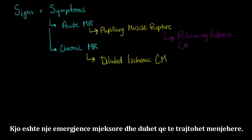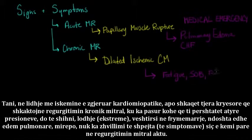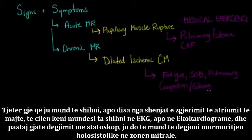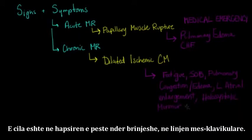For chronic mitral regurgitation — such as dilated ischemic cardiomyopathy or other major causes where there has been time to adjust to these pressures — you'll see things like fatigue, shortness of breath, and maybe some pulmonary congestion or edema, but not the rapidly developing type seen in acute mitral regurgitation. Other signs include left atrial enlargement visible on an EKG or echo. On auscultation, you should hear a holosystolic murmur at the apex, in the fifth intercostal space at the midclavicular line.